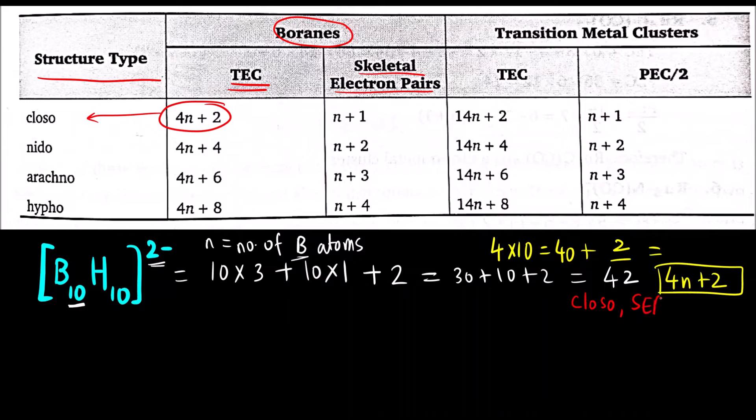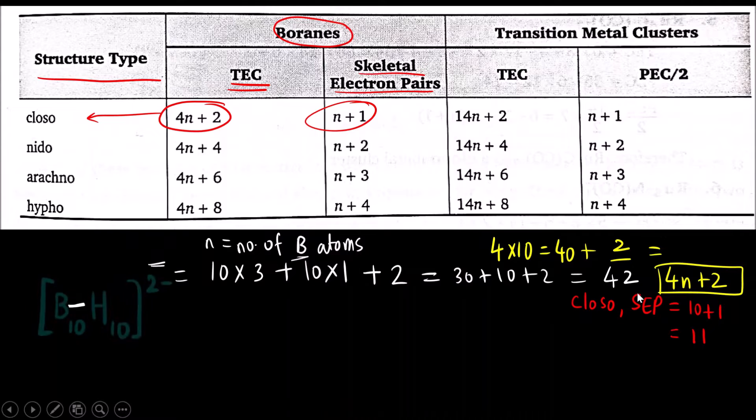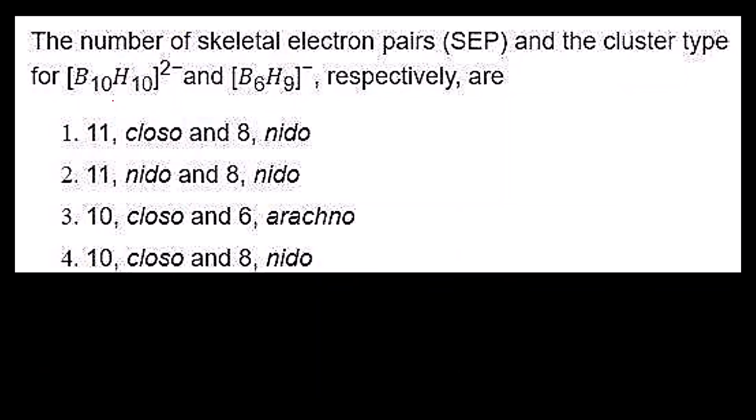If I want to calculate skeletal electron pair SEP, that will be N plus 1. N is number of borons, 10. So 10 plus 1, that will be 11. So Closso and 11. In which options you can see Closso and 11? 11 Closso. Just by the first option is the correct answer.